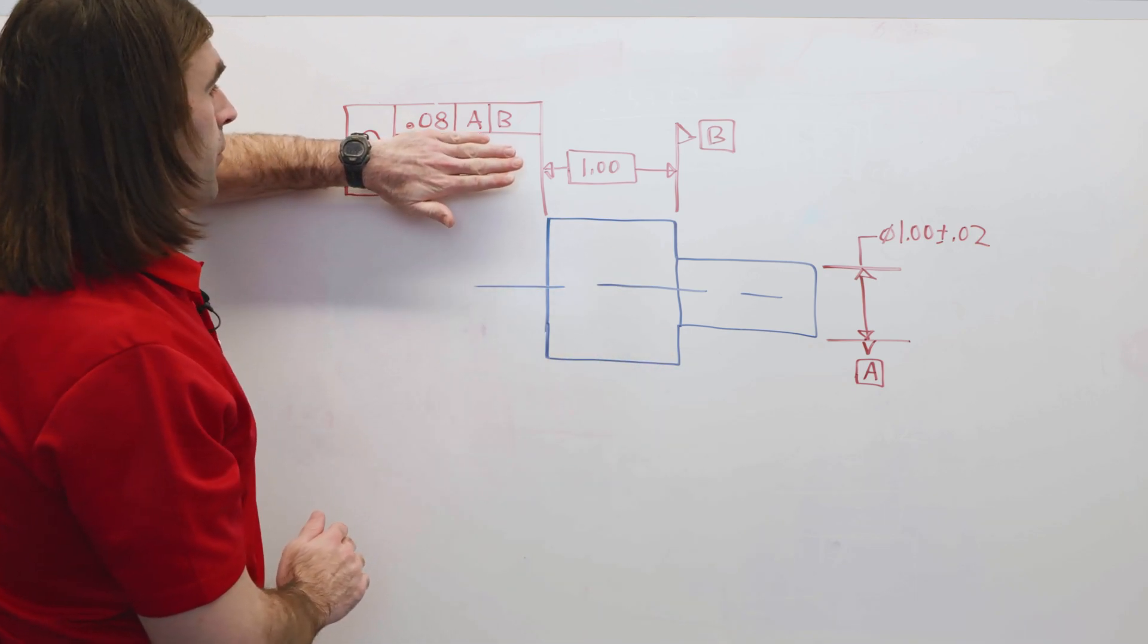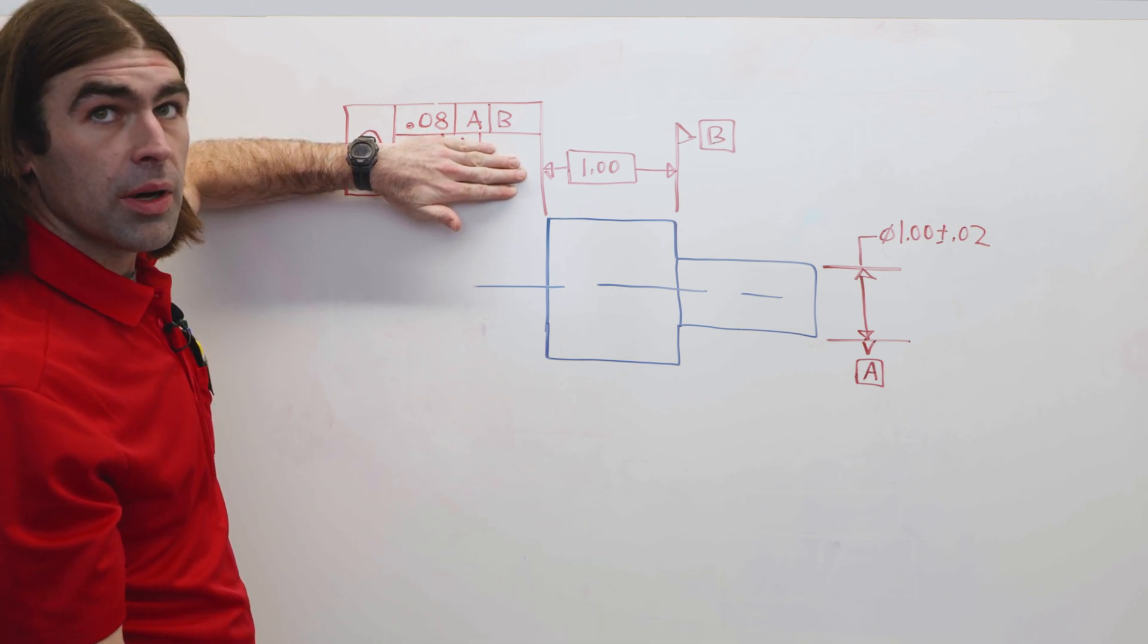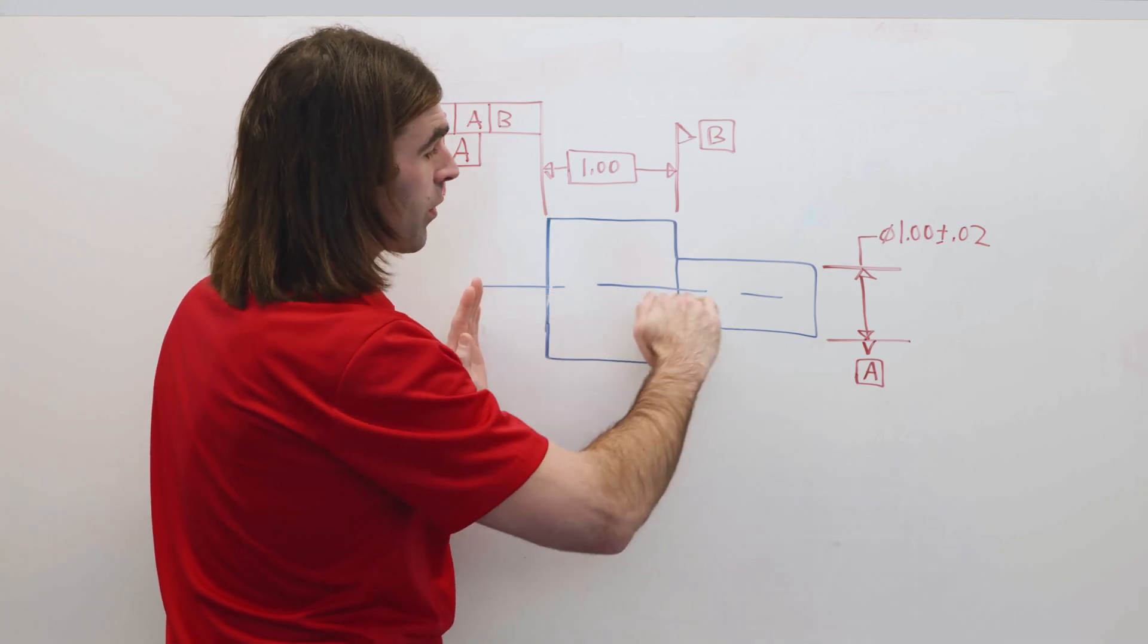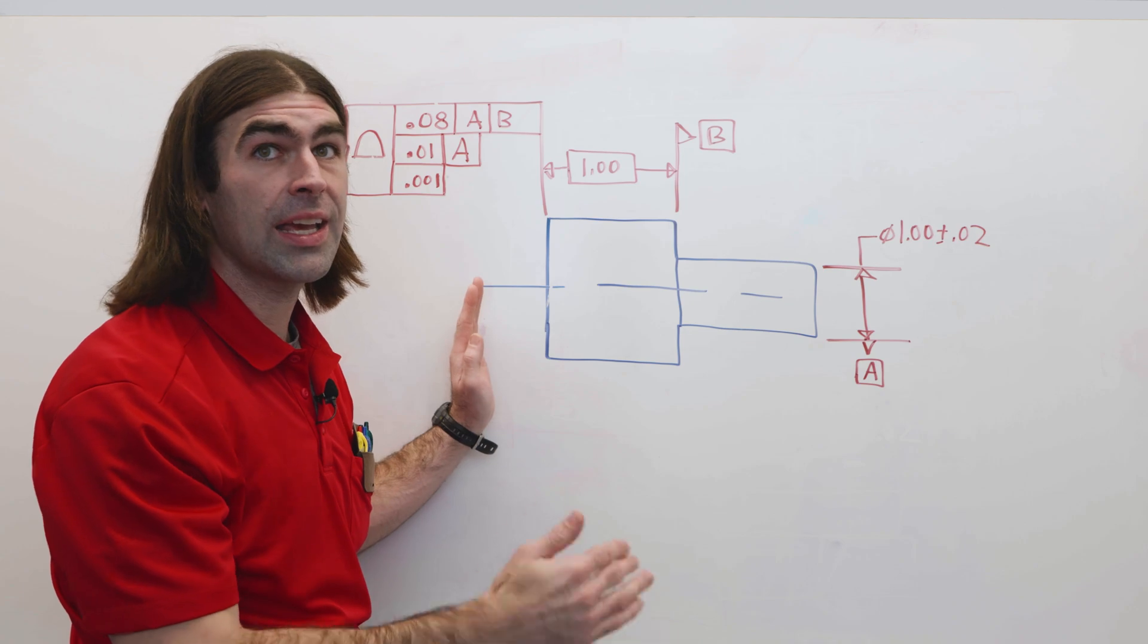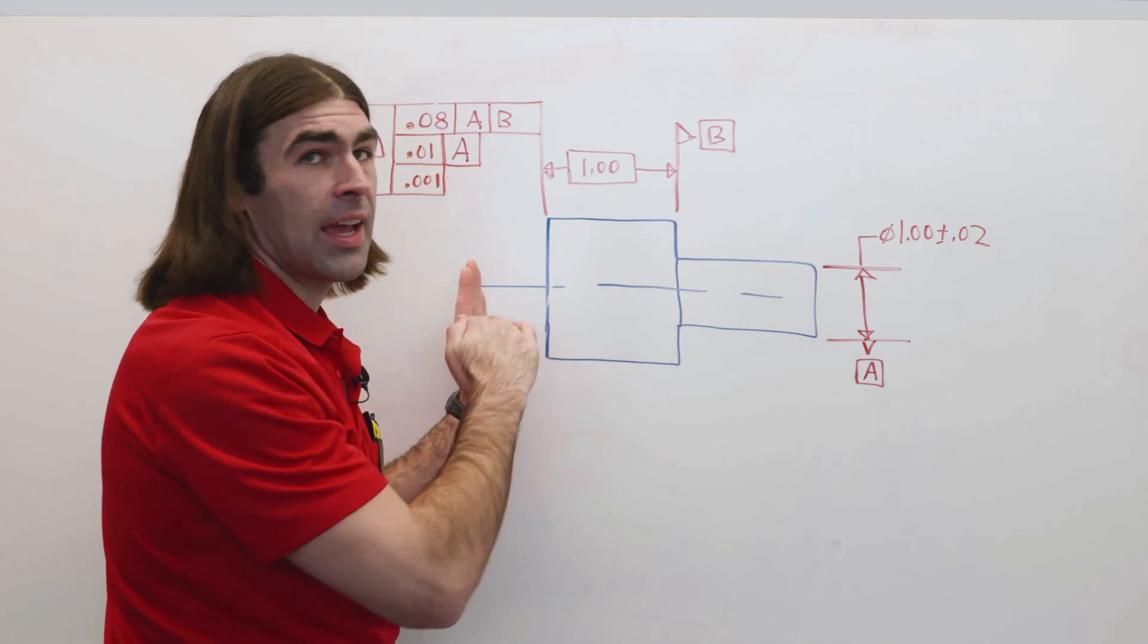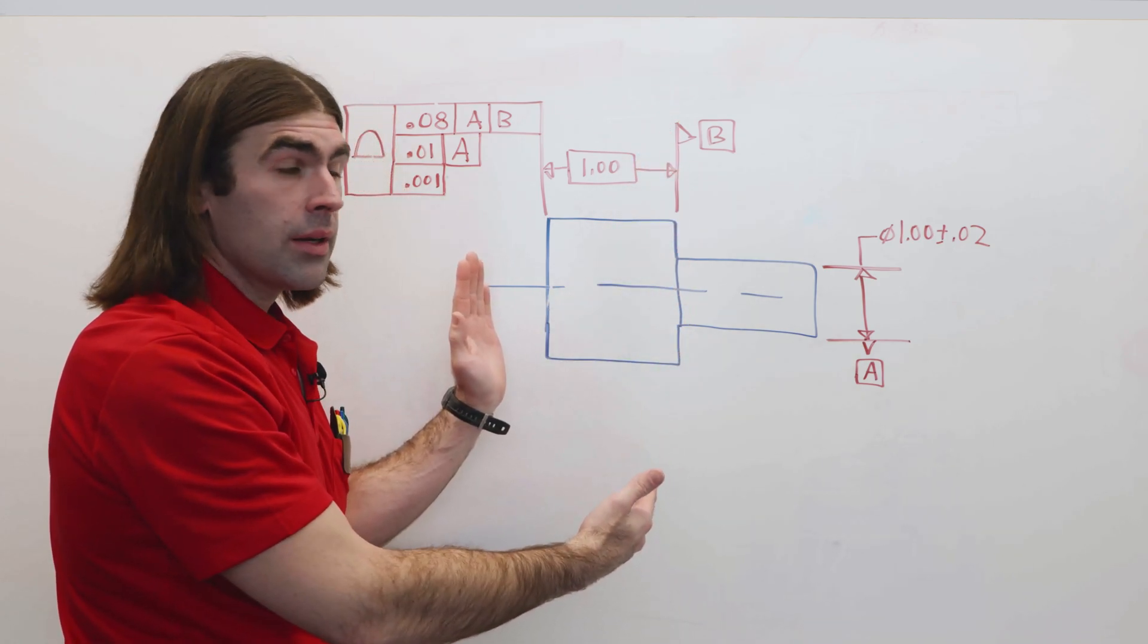So let's look at the first one, 80 thousandths to A and B. That's telling us this surface needs to be oriented to A because that's the only possible thing it could be. It can't be located to A because you can't measure on the same axis. And then it's got to be located to B.